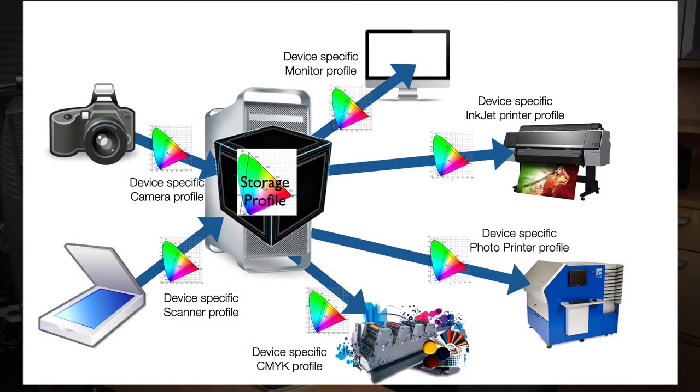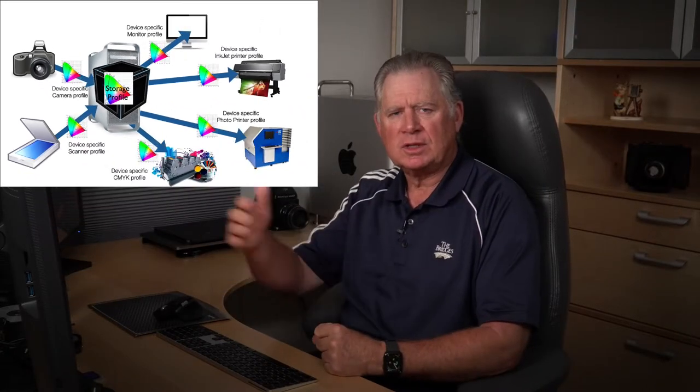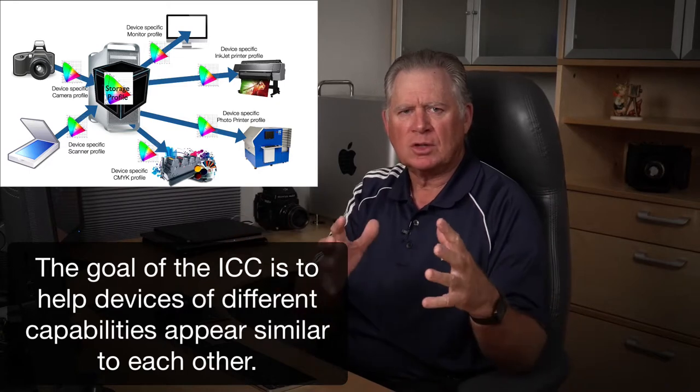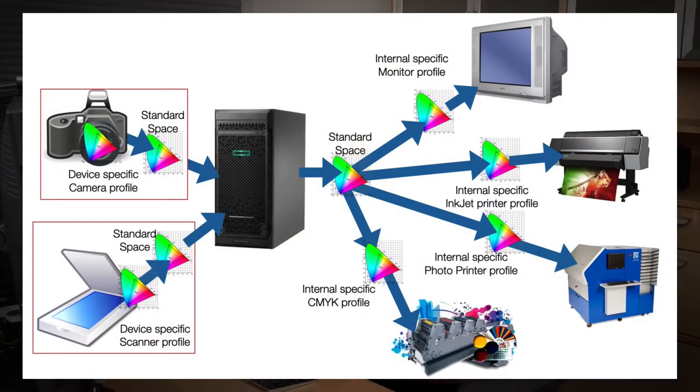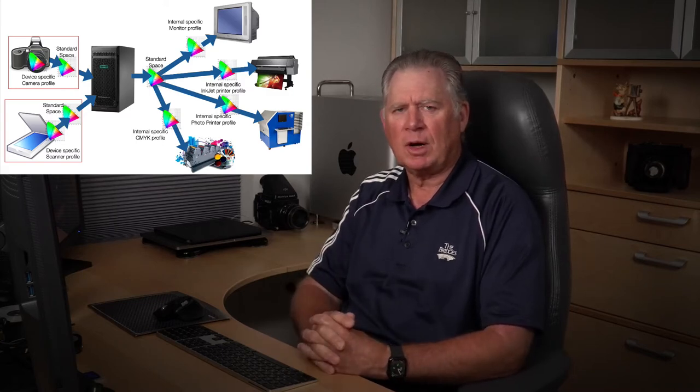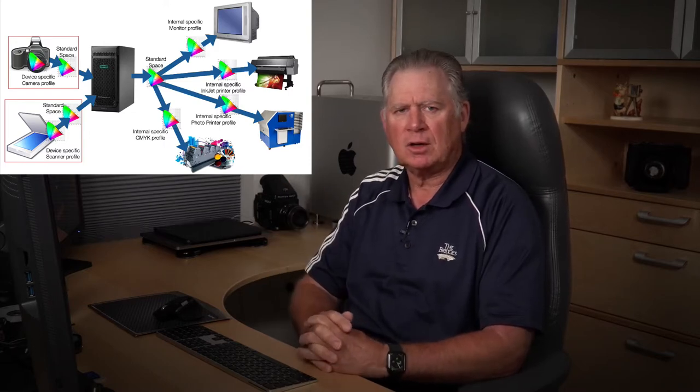In part two, we talked about the two theories on color management that evolved through the 90s. One developed by the ICC International Color Consortium: a computer is at the heart with a color management system built in, and we don't actually change the data until we send it to a device, maximizing the capability of any device. The other concept was sRGB — all devices use a common color space, but that space has to be fairly small because it's based on the lowest common denominator. I'm not saying sRGB is bad, but if you're watching this series for high-end color management, we're only going to deal with the ICC workflow.